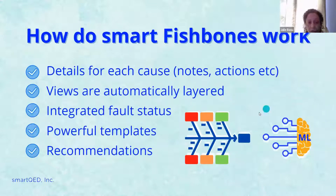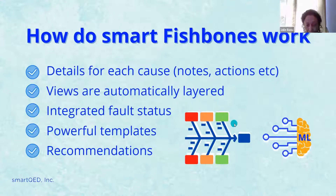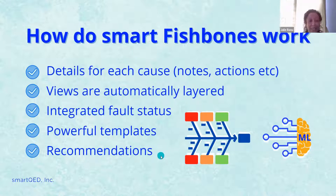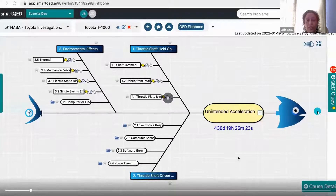We can associate details for each cause in context, and we will shortly see a demo. Views are automatically layered, which is important because we saw how easy it is to get lost in in-depth analysis. We have integrated fault status — you can indicate with colors what is the outcome of each cause. We also have a templating capability: you can mix and match templates depending on the components, like throttle could have its templates and pedal could have its template. Last but not least, recommendations are generated by our ML algorithms. Imagine a fishbone diagram with an ML brain attached — it watches what we are doing and creates associations to help us in future.